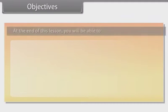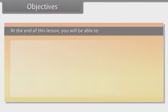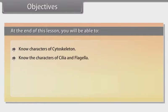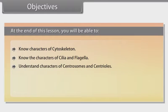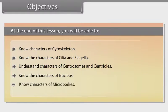Objectives: At the end of this lesson, you will be able to know the characters of cytoskeleton, know the characters of cilia and flagella, understand characters of centrosomes and centrioles, know the characters of nucleus, and know characters of microbodies.